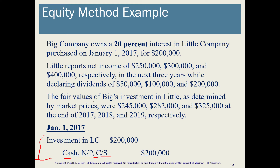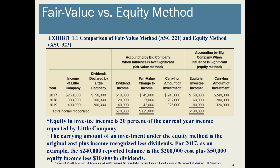In addition, we have the fair values of the investment, depending on whether we're using the fair value method versus the equity method. In the first column we have Little's income for the three years and the dividends that were declared — for 2017, 2018, and 2019.